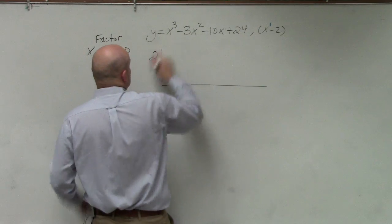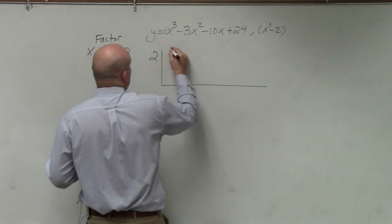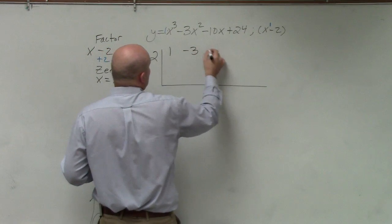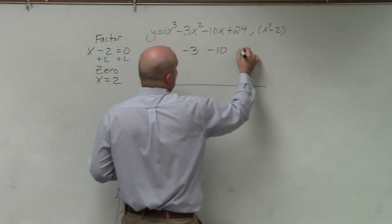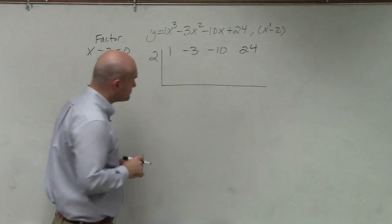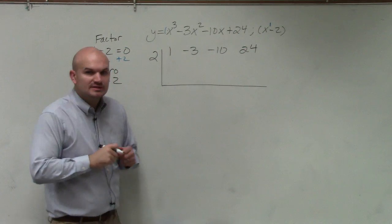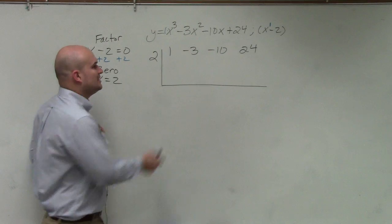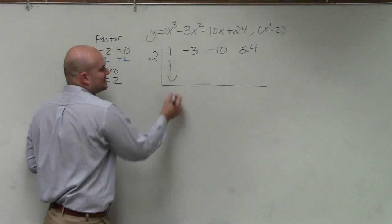So I take the coefficients here. So there's a 1 there. So I have 1, negative 3, negative 10, and then positive 24. So I'll just go through synthetic division one more time, just nice and slowly. First number we always bring down. That's like the freebie. Then we multiply in the diagonals.